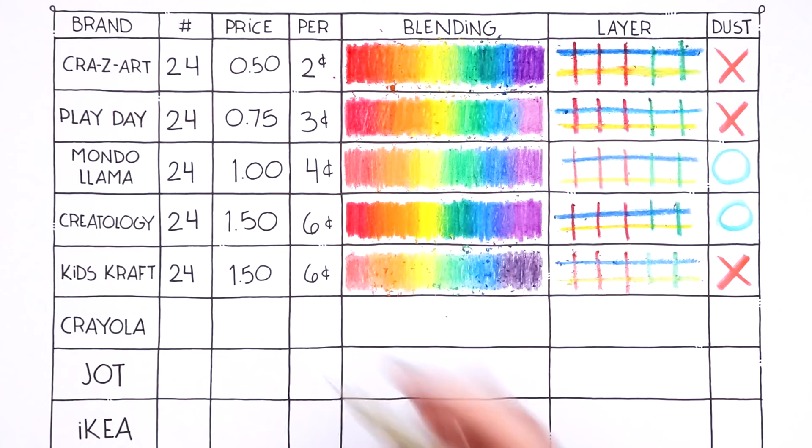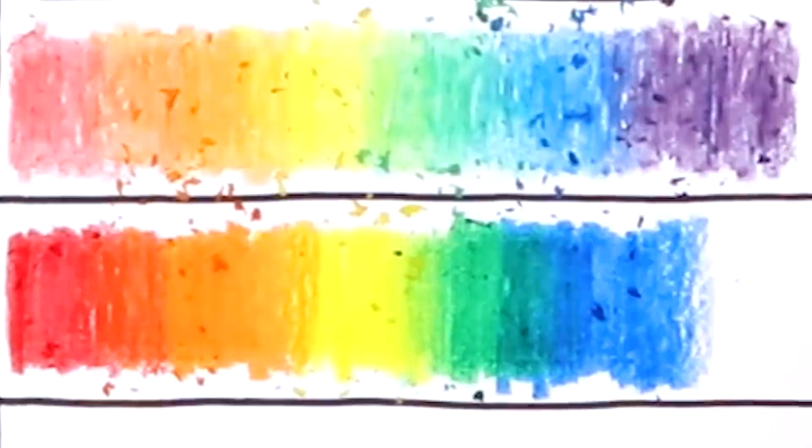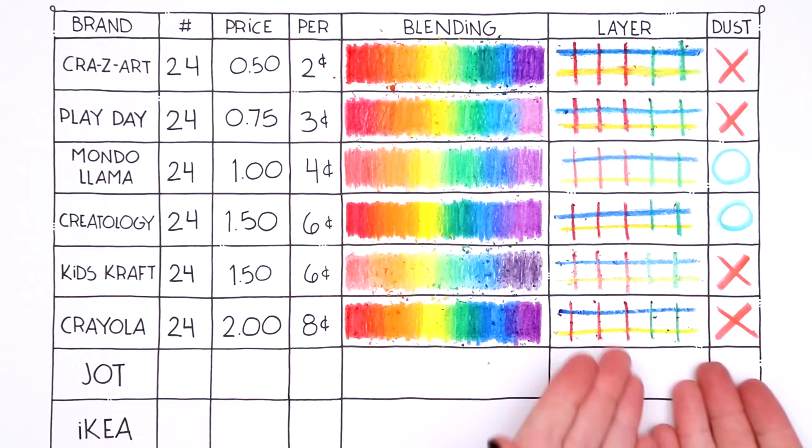Next up we have probably the most well-known crayon brand, Crayola plastic. We have a 24 pack at $2 a pack. Of course it does vary where you buy them, but we're going with $2, bringing us up to 8 cents per crayon. I do have to say the blending, very lovely. The color going down, love it, nice and solid. Dusting? The dusting I could go without. Honestly I really do like the quality of Crayola. I like the blending, it goes down well. I do have to say the dusting isn't great. I think when you look at the layering, if there's that much dusting from like a single line, you blew it.